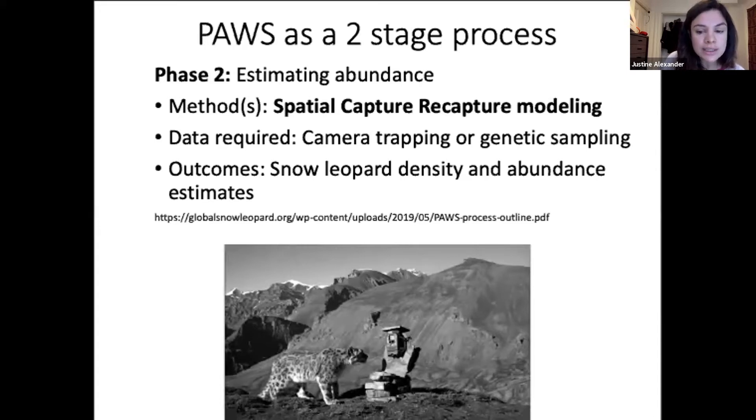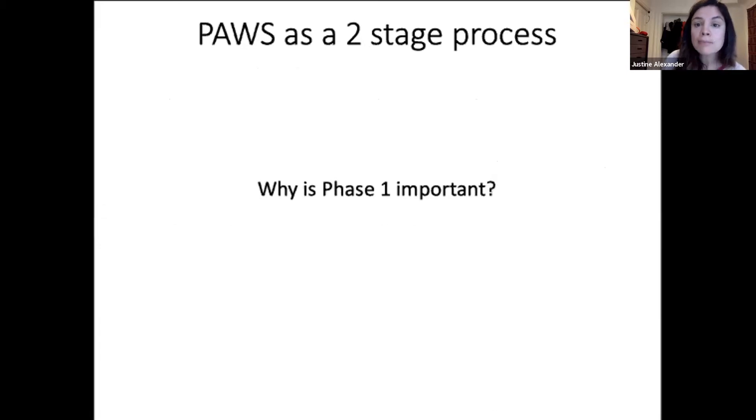But you may ask yourself, if we're interested in knowing how many snow leopards there are, which is abundance, why is phase one important, and how does it link to phase two? If you have any ideas, please write it in the chat. Why do you think we need to first do phase one?